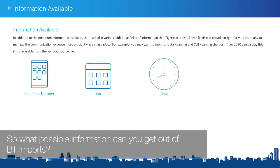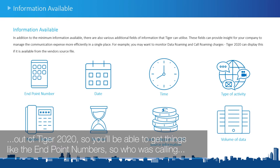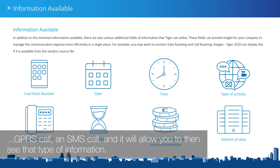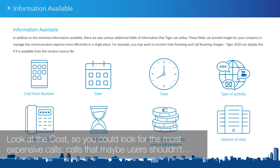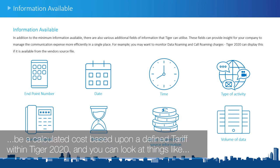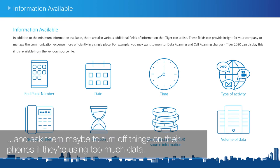What information can you get out of bill imports? In addition to the minimum fields, there is additional varying data available from Tiger 2020. You can get endpoint numbers, date and time of the call, type of activity such as MMS, GPRS, or SMS, dialed numbers, and duration. You can look at cost to find the most expensive calls or calls users shouldn't be making — the cost can be from the vendor or a calculated cost based on a defined tariff within Tiger 2020. You can also look at data volume to identify high-usage users and perhaps ask them to turn off certain features on their phones.